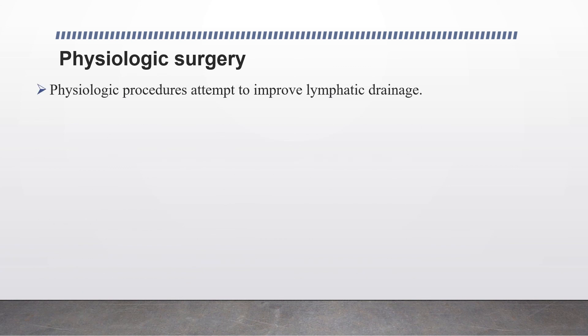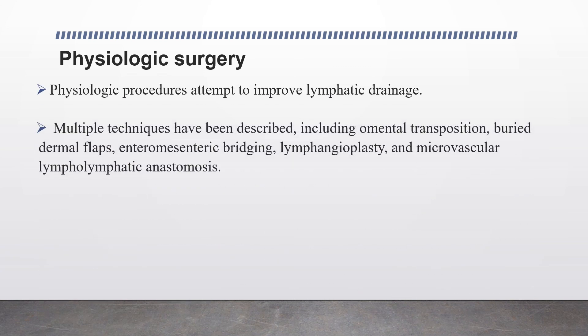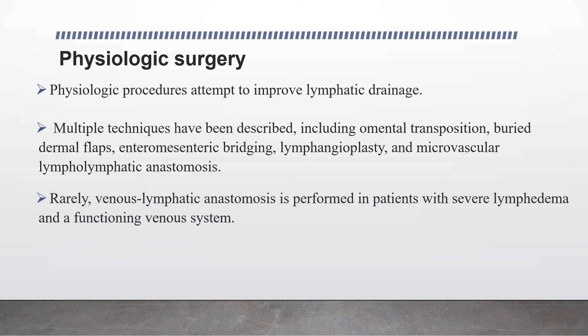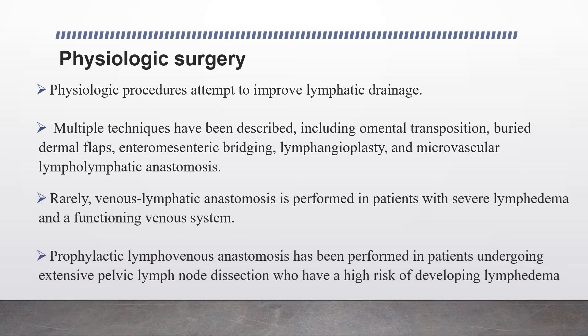Physiologic procedures attempt to improve lymphatic drainage, and multiple techniques have been described, including omental transposition, buried dermal flaps, enteromesenteric bridging, lymphangioplasty, macrovascular lymphatic anastomosis, and — rarely — venous lymphatic anastomosis performed in patients with severe lymphedema and a functioning venous system. Prophylactic lymphovenous anastomosis has also been performed in patients undergoing extensive pelvic lymph node dissection who have a high risk of developing lymphedema.